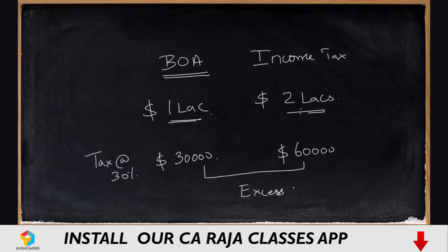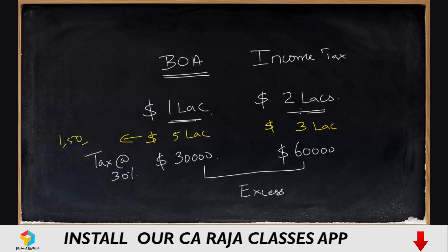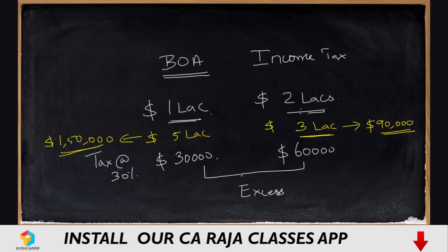A similar but opposite situation can also arise, where you may have more profit in your books of accounts and less profit under income tax. For example, say your profit as per books of accounts is five lakh dollars, but your income tax record says your profit is only three lakh dollars. Your tax should ideally be five lakh into thirty percent — one lakh fifty thousand dollars — but your income tax rule says only three lakh into thirty percent, so you pay only ninety thousand dollars. In one scenario you pay more, in another you pay less.